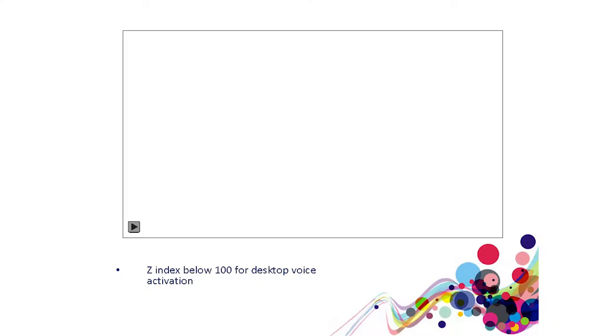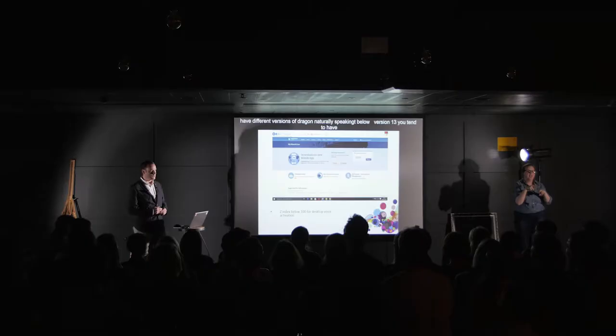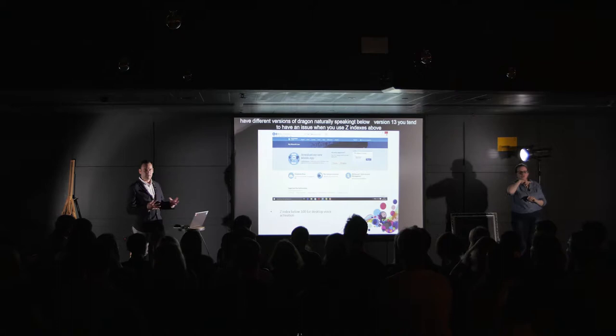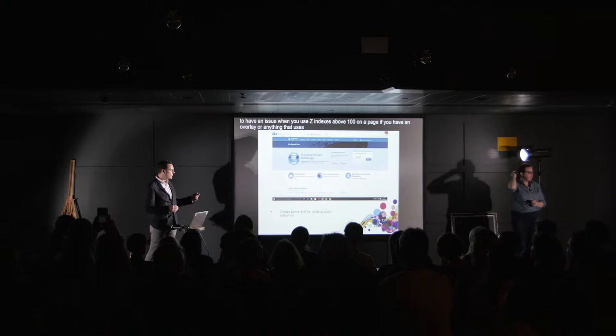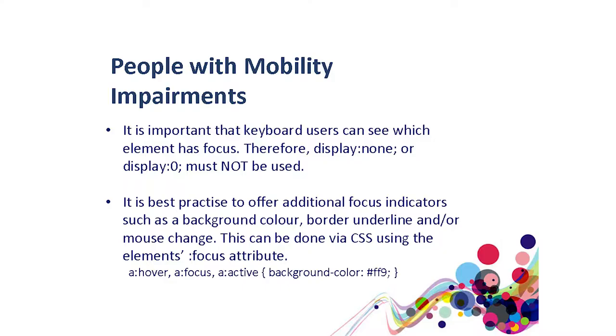Voice activation software in action — Bex navigates around the computer screen by verbally saying different commands. A key technical issue: with different versions of Dragon NaturallySpeaking below version 13, there's a problem when you use Z-indexes above 100 on a page. So if you've got an overlay, a pop-up, or anything that uses Z-indexes, be mindful that voice activation software may have a problem because the tagged buttons go behind the layer.